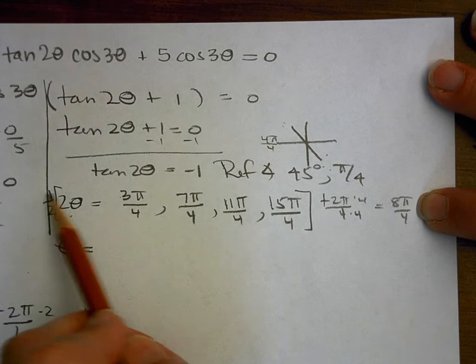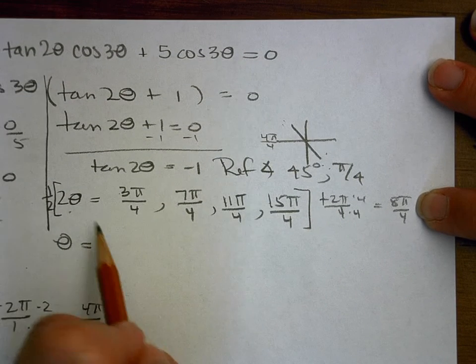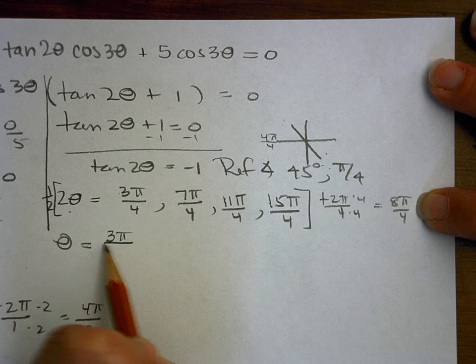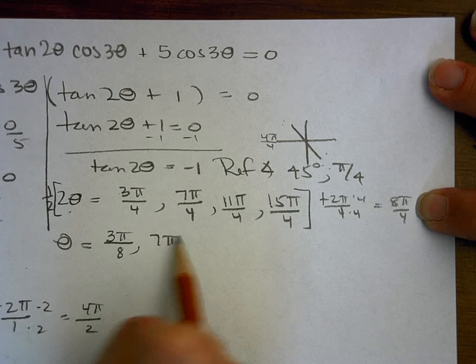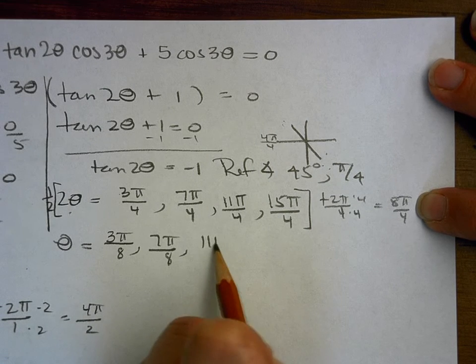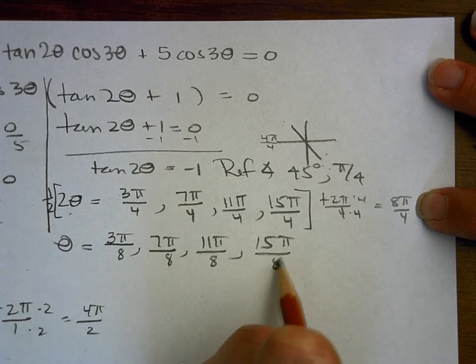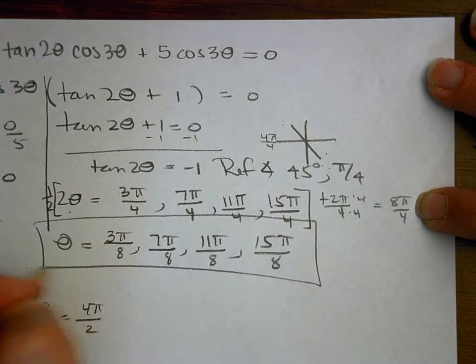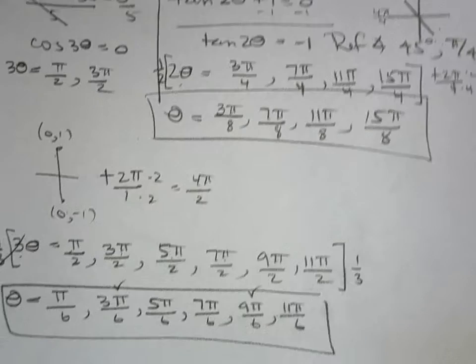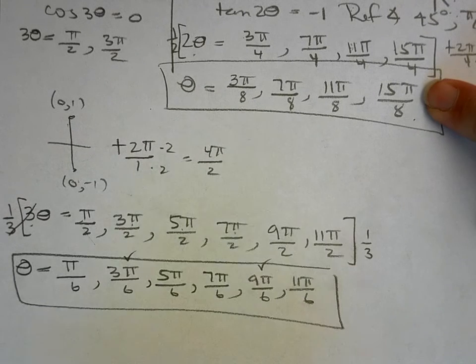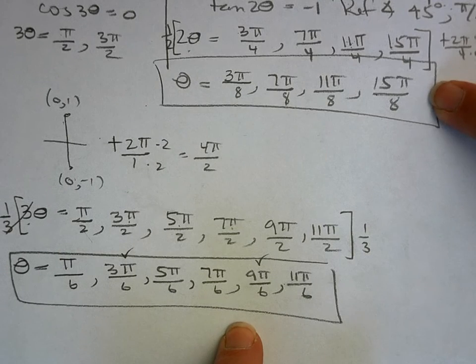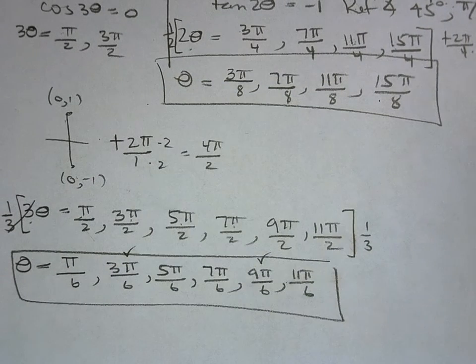So this will be 3 pi over 8, 7 pi over 8, 11 pi over 8, and 15 pi over 8. And that would be it, my friends. So we have those four and these six, and all of those would be my answers to number 10. And that's it for this one.